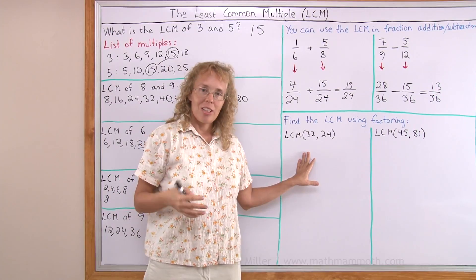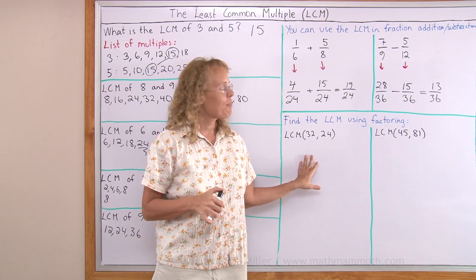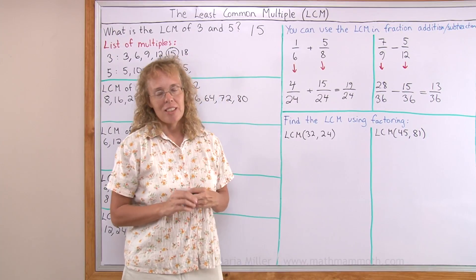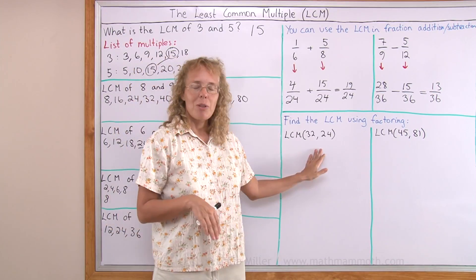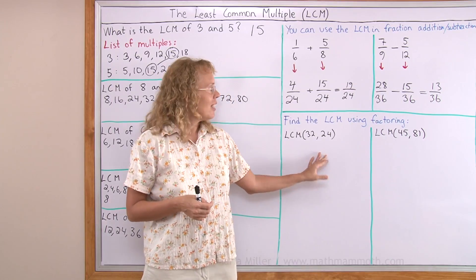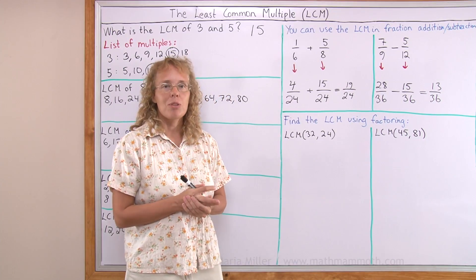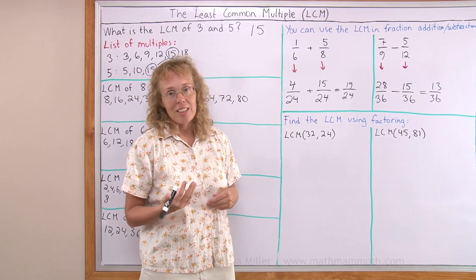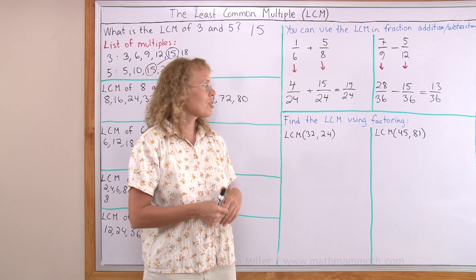There's also another method for finding the least common multiple that is especially useful as our numbers get bigger. And while you may not need this method in sixth grade, I also want to show you a few examples because it is pretty understandable. It uses factoring — the prime factorization of those numbers.